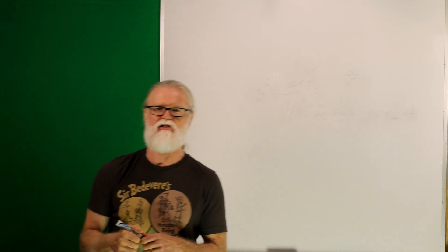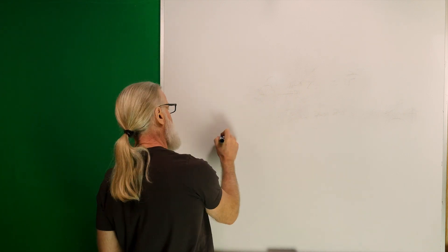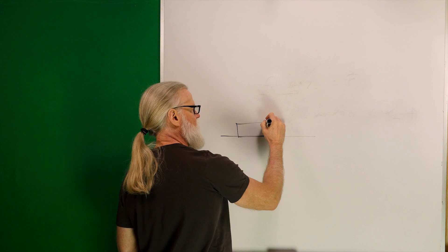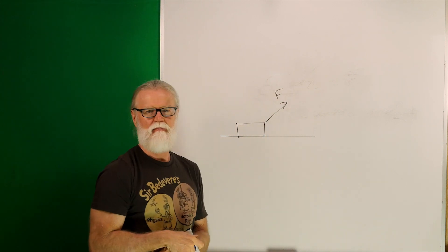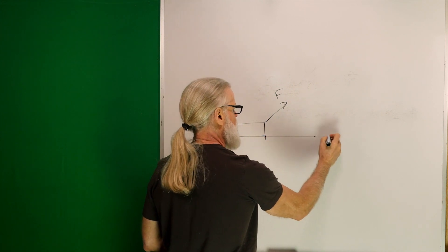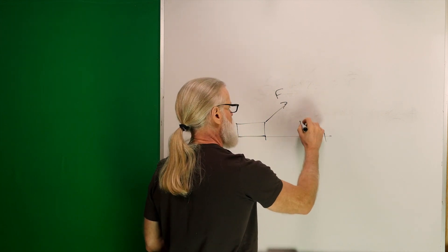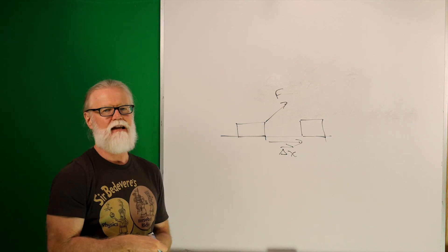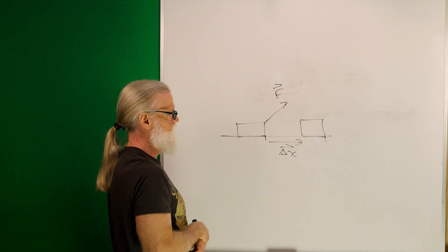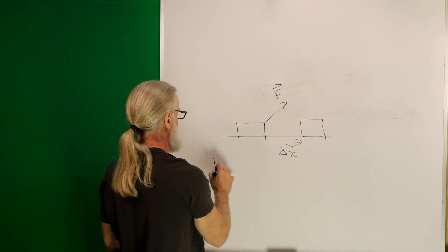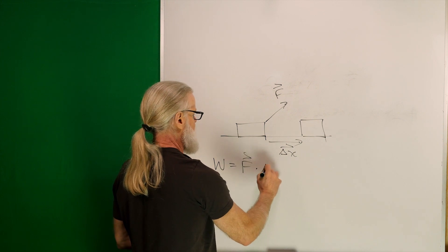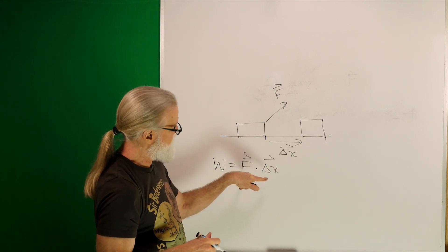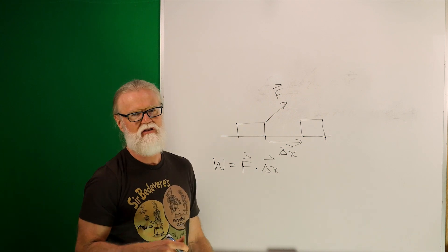We used the dot product when we did energy. For instance, if you had a block being pulled across a frictionless surface with a force F, and it displaced some vector delta x, to figure out how much work was done we would say the work equals F dot delta x. The result of a vector dot product is a scalar — in this case it was energy.